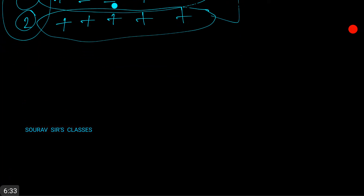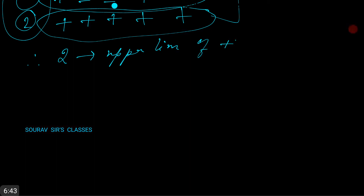Therefore, we see that 2 is the upper limit of the positive roots of f(x) = 0.